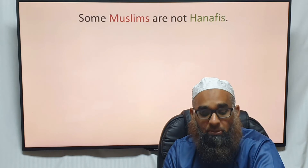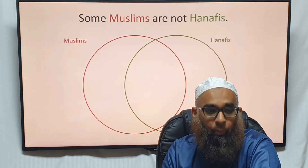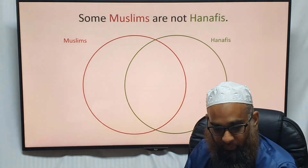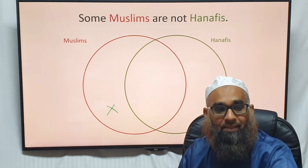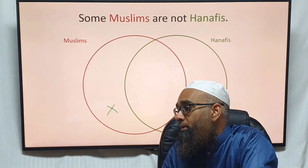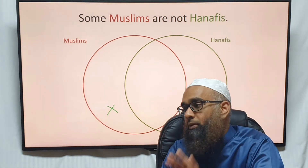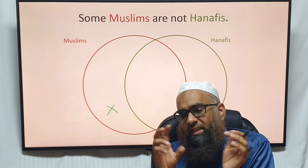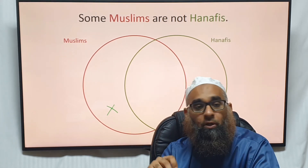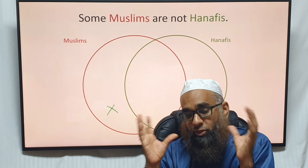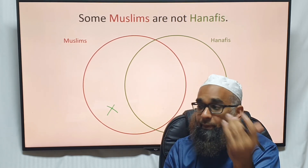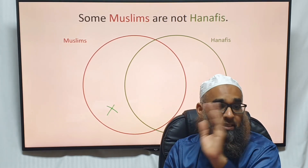If you have an O proposition — 'Some Muslims are not Hanafis' — where do we put the X? We put the X outside the overlap, in the Muslims-only area. We know some Muslims are not Hanafis; anything beyond that we can't say. So that's the simple rule for how we diagram propositions. We'll need this more in the next few lessons, where we'll see the full benefits of visually depicting propositions.